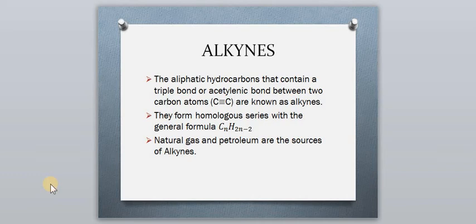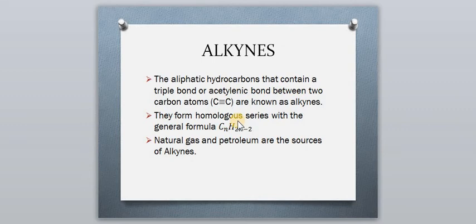Today we are going to discuss alkynes — their lab preparation, purification, physical properties, and chemical properties. Alkynes are aliphatic hydrocarbons that contain a triple bond, also known as an acetylenic bond, between two carbon atoms. We have discussed alkenes with a double bond and alkanes with a single bond. Alkynes have a triple covalent bond between the carbon atoms.